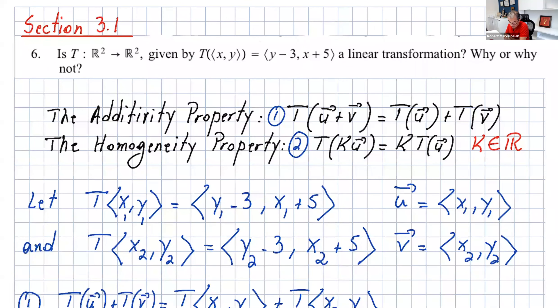If you want to prove it's a linear transformation, always write these two properties. The additivity property: we have to have T(u+v) equal to T(u) + T(v). And the homogeneity property: T(ku) equals k times T(u). If one of those properties fails, you don't have to do the second one. You can just stop there and say it's not a linear transformation.